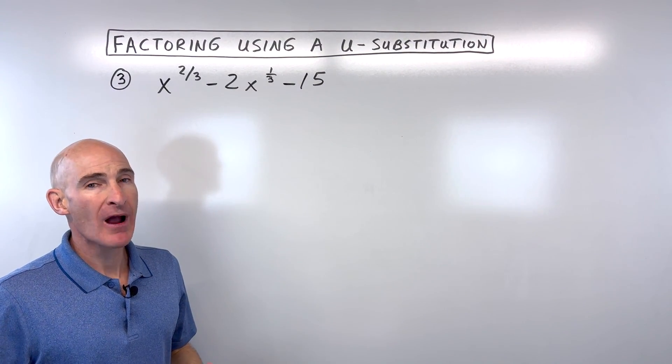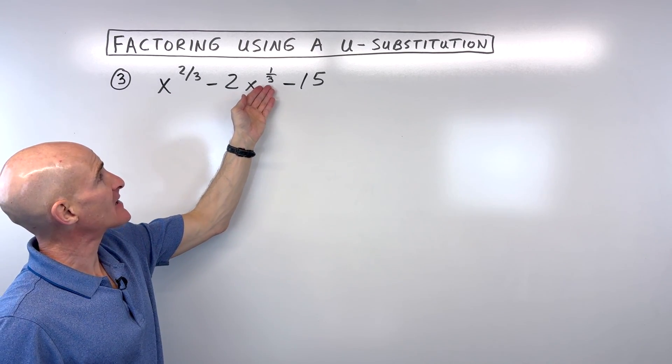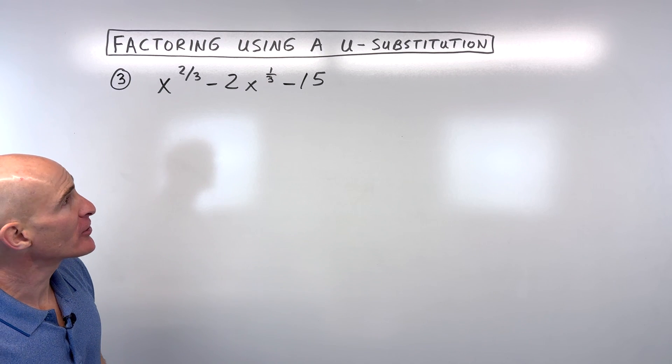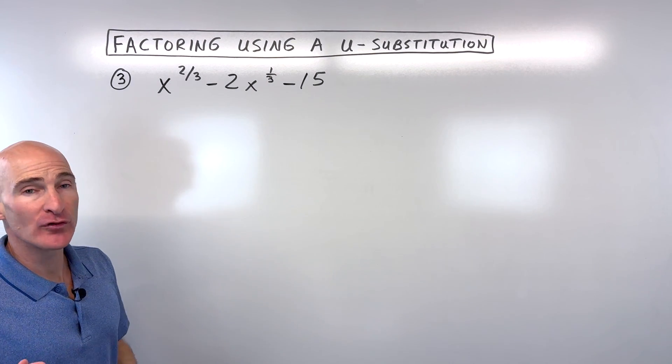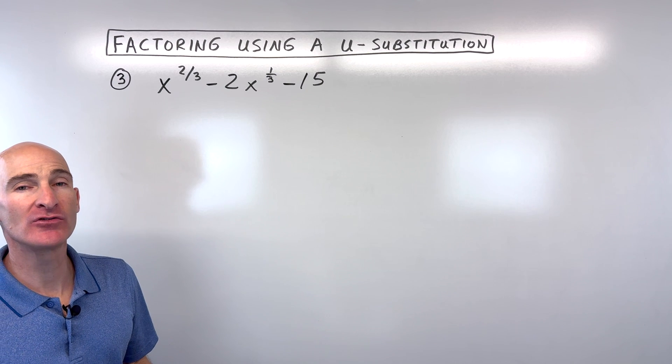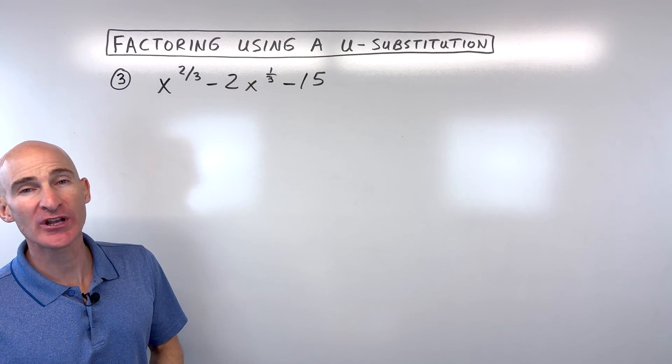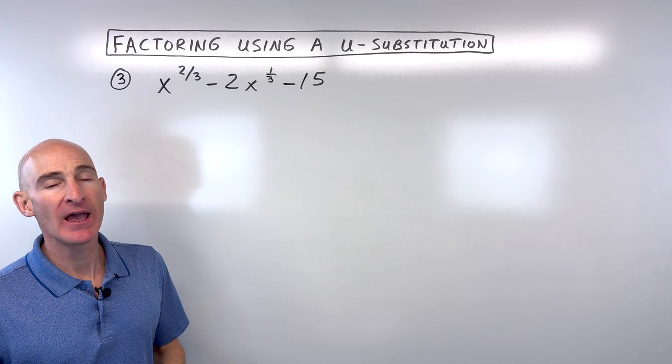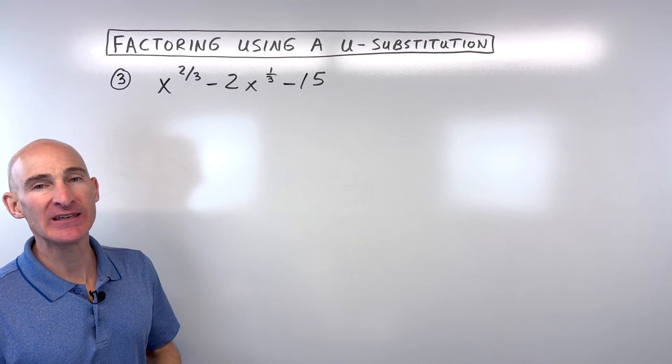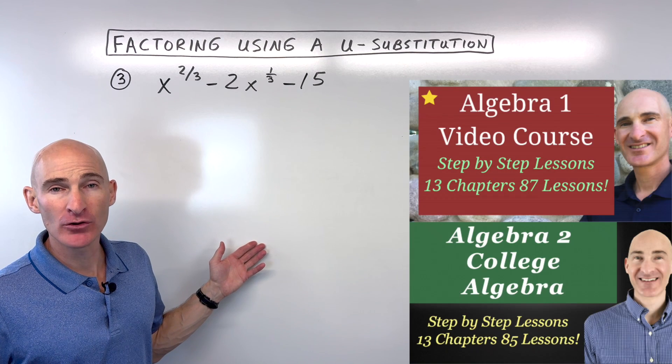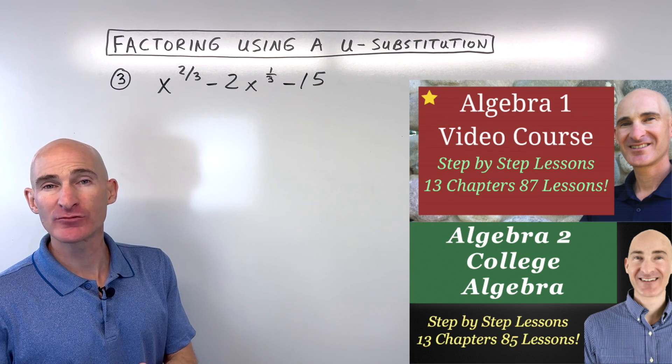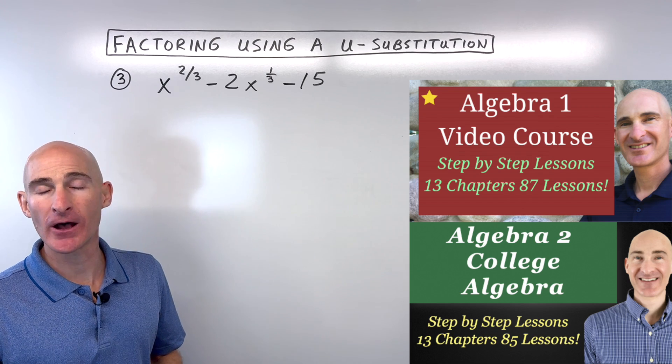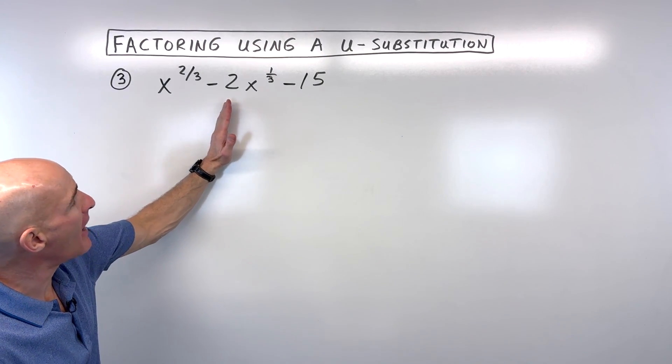Okay, so try this problem on your own. x to the two-thirds minus 2 times x to the one-third minus 15. How would you factor that? And while you're doing that, I just wanted to let you know, if you like the way that I explain things, I've got hundreds of videos like this on my Mars Math Tutoring YouTube channel, where I take you through step-by-step how to solve different problems, and I try to simplify it, make it a little bit easier for you to understand. I also have video courses I want to make you aware of. I've got an Algebra 1 and an Algebra 2 slash College Algebra video course for sale. I've got links in the description. But for this problem,